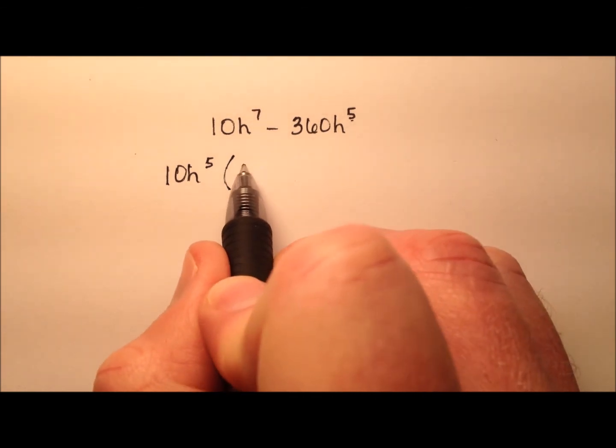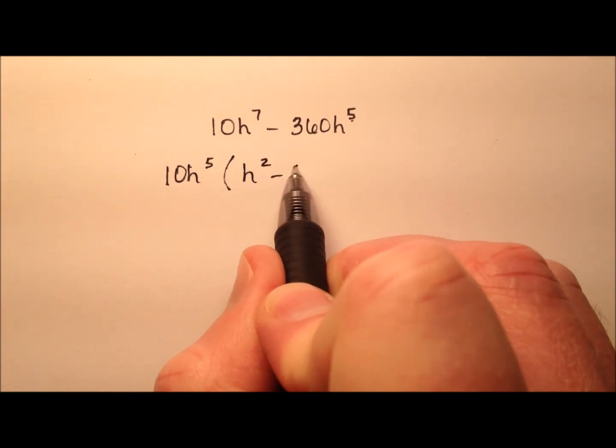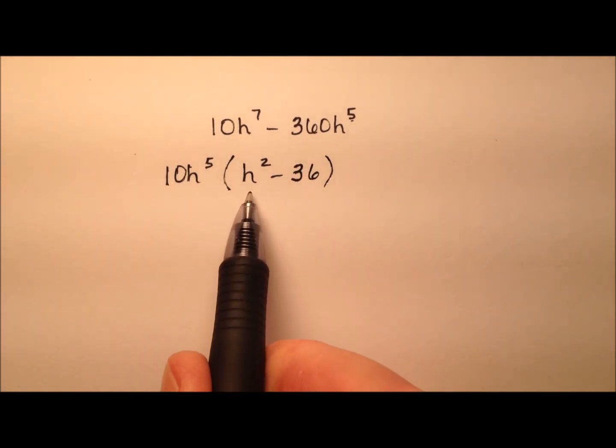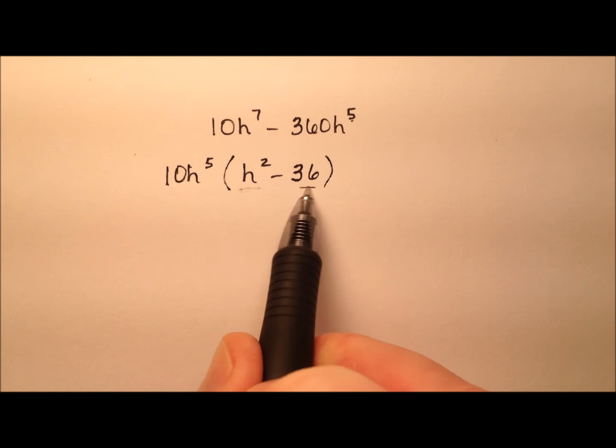When I do that, what I'm left with is h^2 minus 36. It looks like h^2 minus 36 is going to be the difference of two perfect squares.